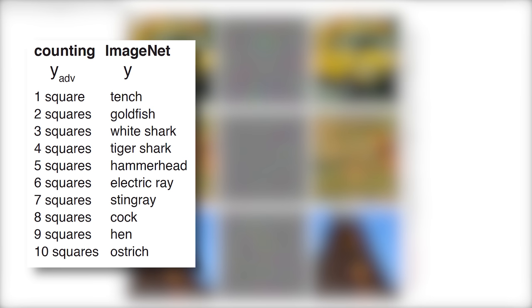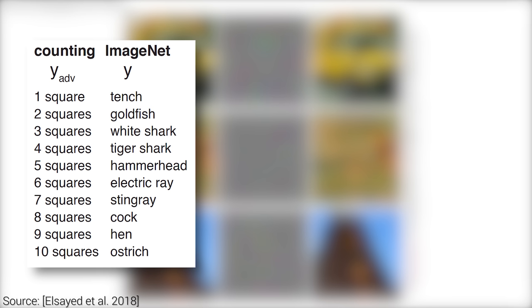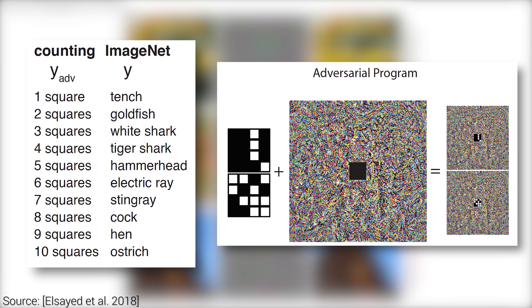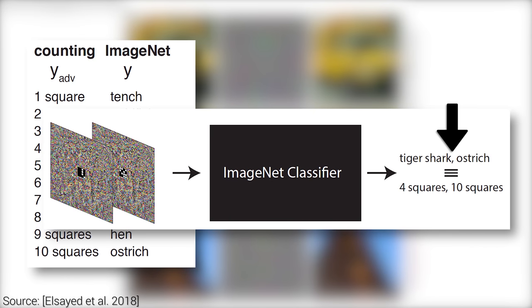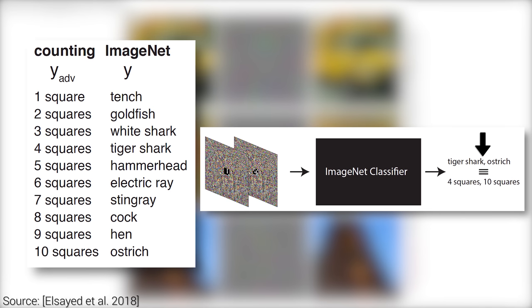Here we are trying to reprogram an image classifier to count the number of squares in our images. Step one: we create a mapping between the classifier's original labels and our desired labels. Initially, this network was made to identify animals like sharks, hens, and ostriches. Now we seek to get it to count the number of squares, so we make an appropriate mapping between their domain and our domain. We then present the neural network with our images — basically noise and blocks — crafted to coerce the neurons to perform our desired task. The neural network outputs 'tiger shark' and 'ostrich,' which, when mapped to our domain, means four and ten squares respectively — exactly the answer we were looking for.